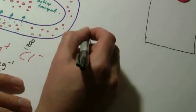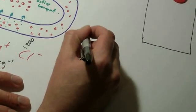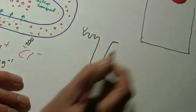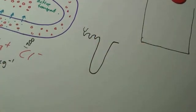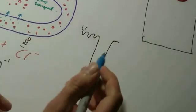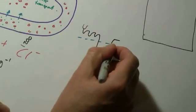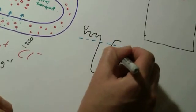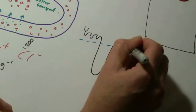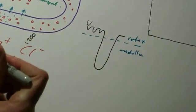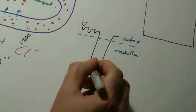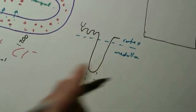Remember as well that this part of the Loop of Henle, if I draw a quick nephron out, this part of the Loop of Henle is in the medulla. There's the cortex.